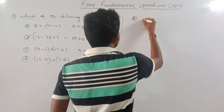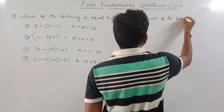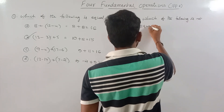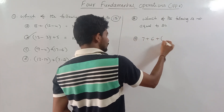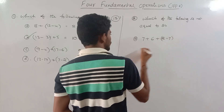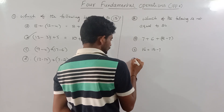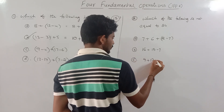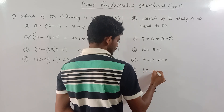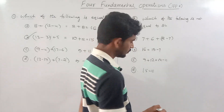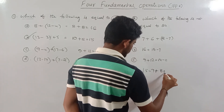Which of the following is not equal to 24? Options: 7 plus 6 plus 18 minus 7; 16 plus 15 minus 7; 9 plus 12 plus 14 minus 11; 15 minus 11; 50 minus 9 plus 8 plus 9. Ok, look at this.